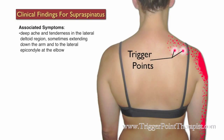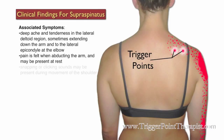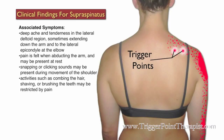Associated symptoms for the supraspinatus trigger points are as follows: clients will complain of a deep ache and tenderness in the lateral deltoid region, sometimes extending down the arm and into the lateral epicondyle at the elbow. The pain is felt when they abduct their arm and may also be present at rest. Clients will also describe a snapping or clicking sound during shoulder movement, and activities such as combing their hair, shaving, or brushing their teeth are usually restricted by pain.